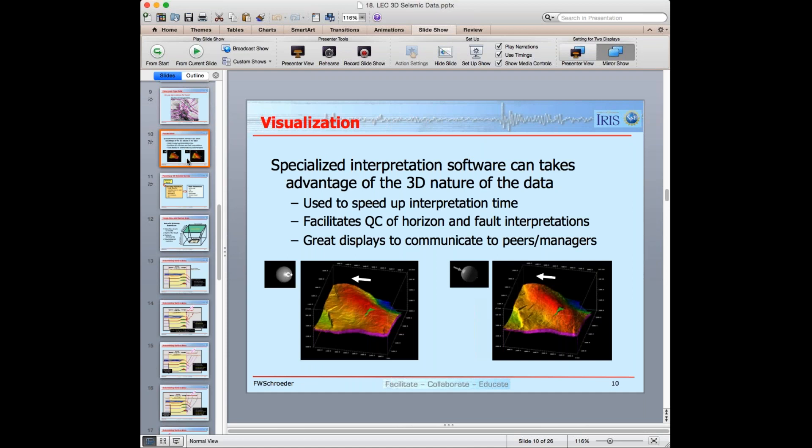The next slide has visualization as the caption. We can use specialized interpretation software to take advantage of the three-dimensional nature of the data. We can use these tools, visualization tools, to speed up the interpretation time. It facilitates our quality control on our horizon mapping and our fault mapping and how horizons and faults intersect. And they are great displays to communicate to our peers and to managers.